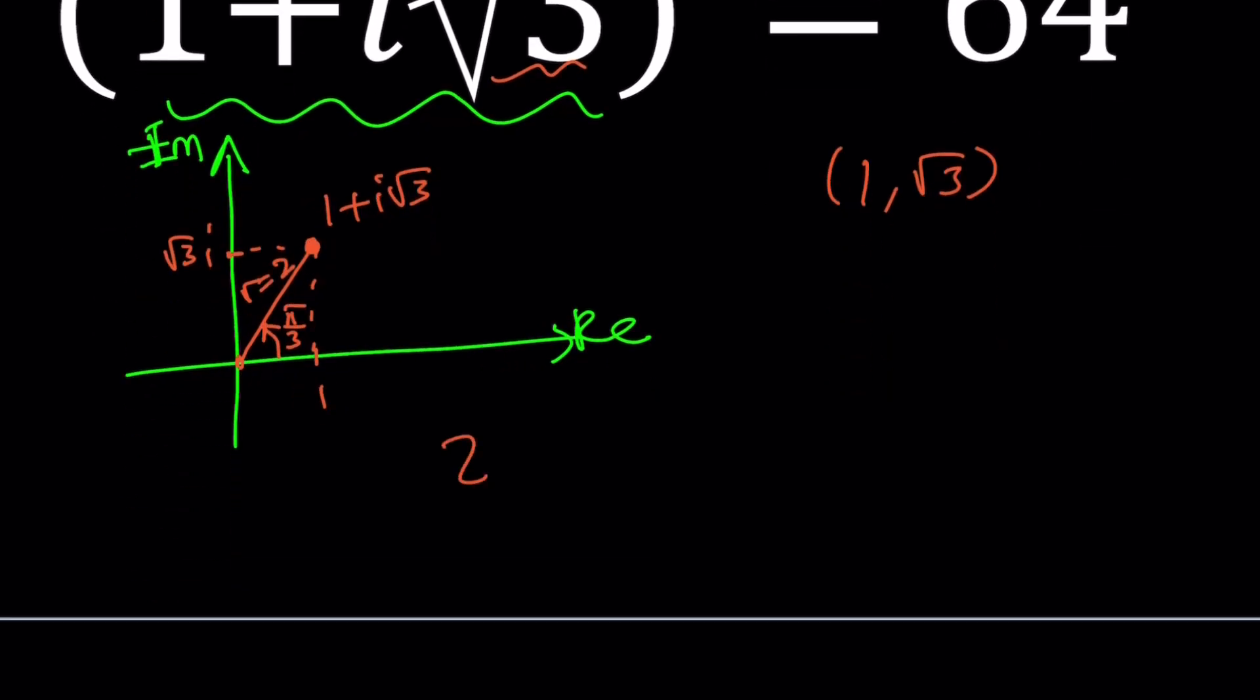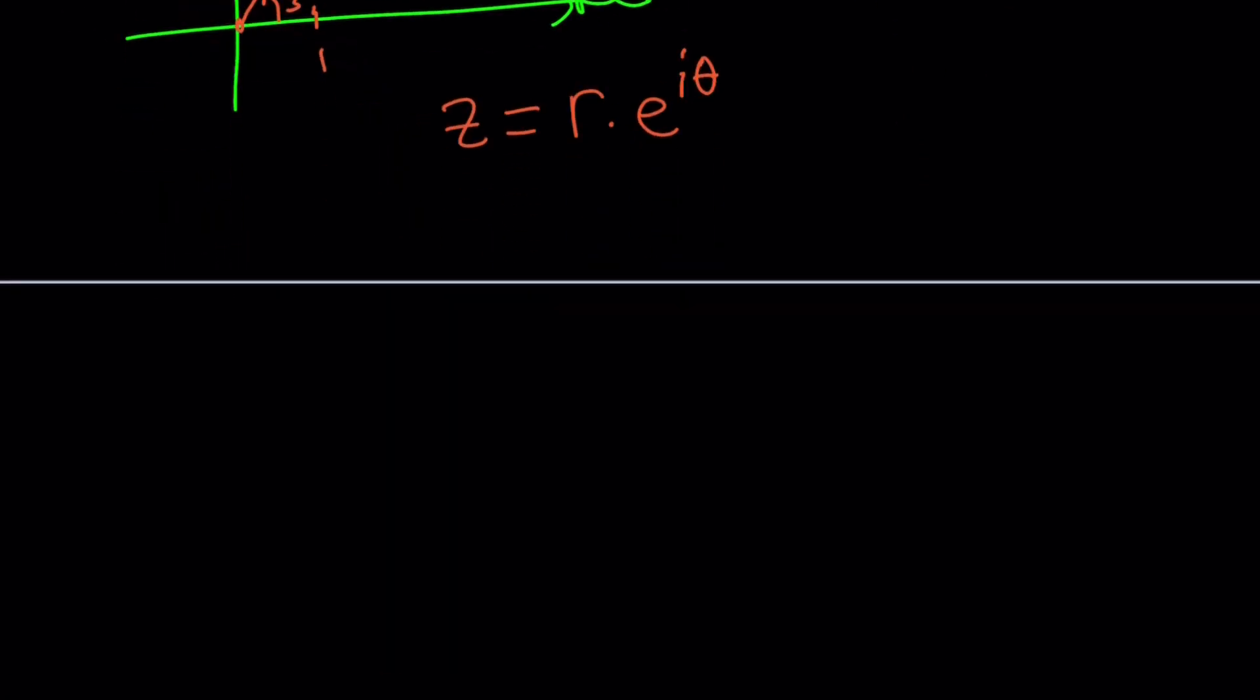And in general, a complex number can be written as r times e to the power i theta, where theta is the angle, the argument. So, we have everything we need. Let's go ahead and write this down. 1 plus i root 3 can be written as 2 times, which is the modulus, multiplied by e to the power i times pi over 3, which represents 60 degrees.